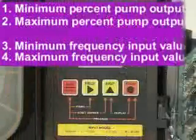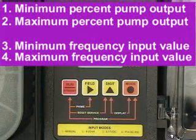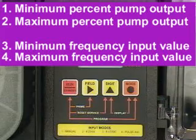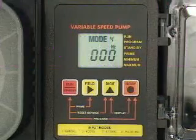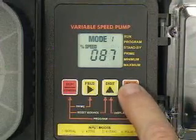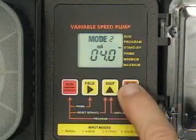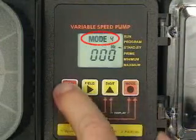Four values can be programmed: the minimum and maximum percentages of pump output and the corresponding minimum and maximum frequency input values. To set the pump for operating mode number four, press the mode button until mode four is shown on the LCD display.